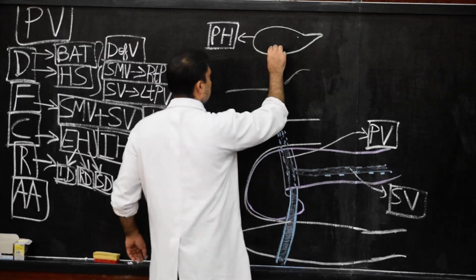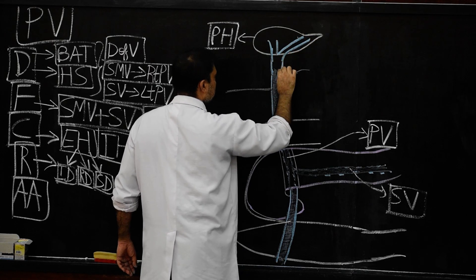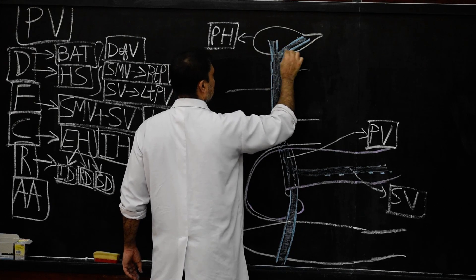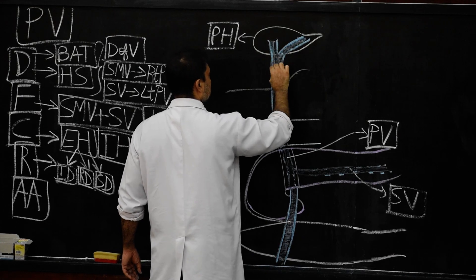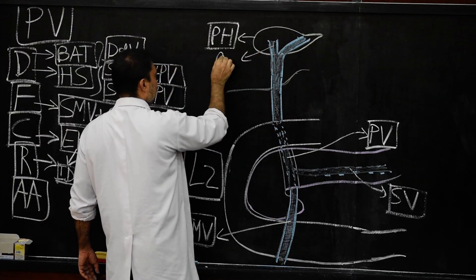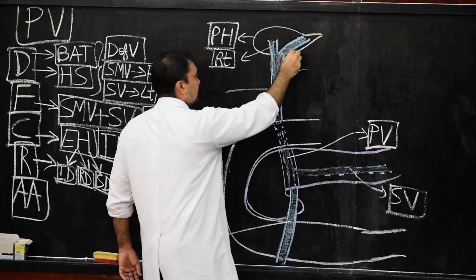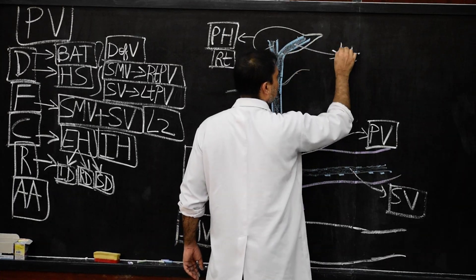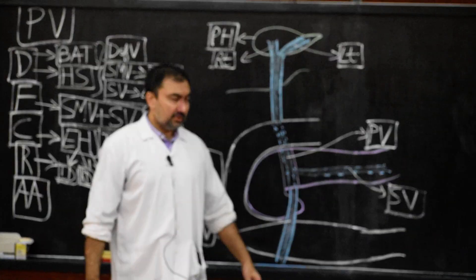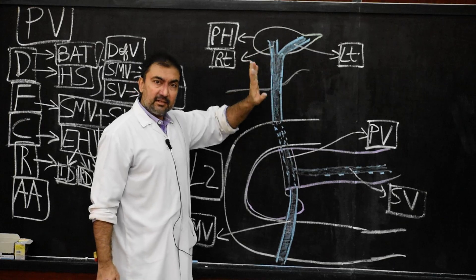The portal vein then reaches the porta hepatis of the liver, where it divides into two branches. The right branch is short and vertical, and the left branch is longer and oblique than the right branch.